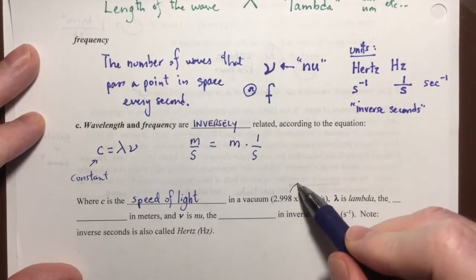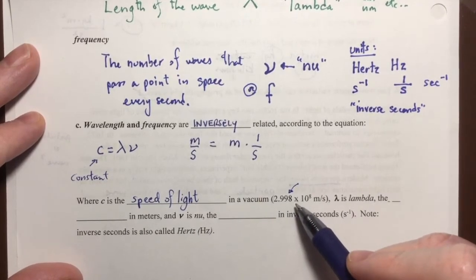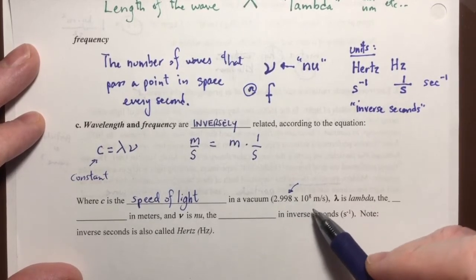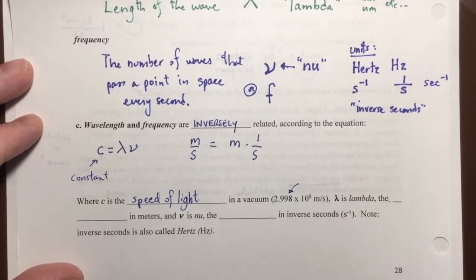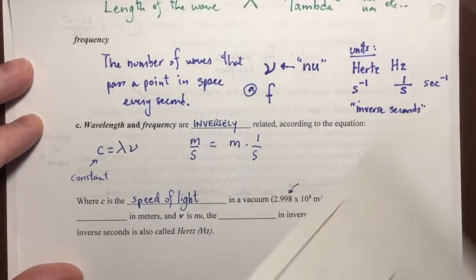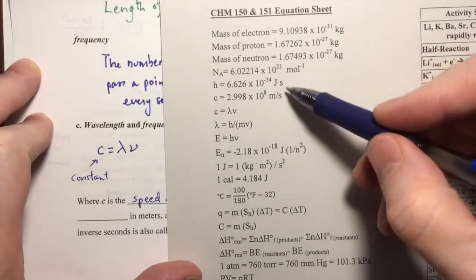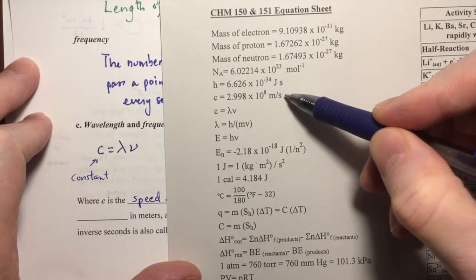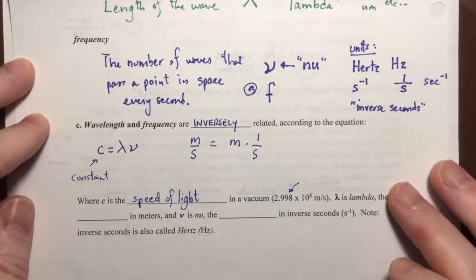We are going to four sig figs in this number. You may have learned to round this to 3.00 times 10 to the eighth, but we need all four sig figs so that we don't limit our precision. If you look on the back of your periodic table, you'll see that we've given you this value, so you don't have to remember it. That's the constant c — the speed of light in a vacuum.